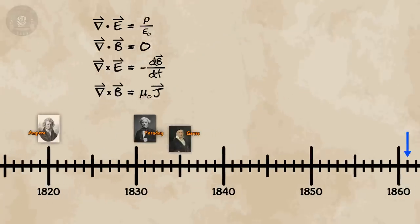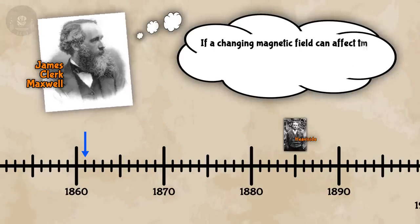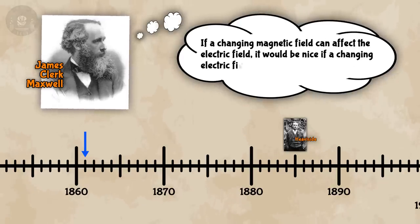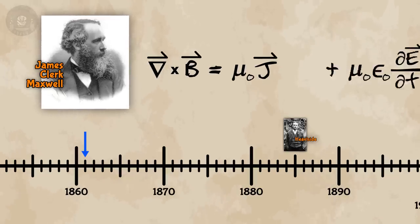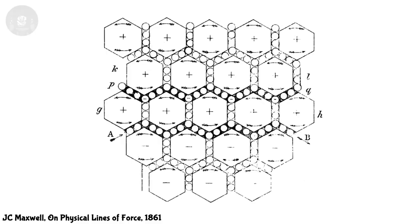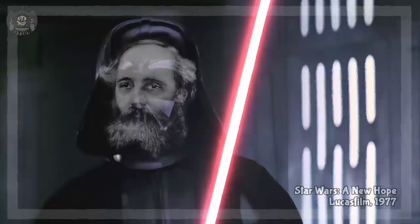Back to the timeline! 30 years after Faraday, James Clerk Maxwell enters the conversation. He thought to himself: if a changing magnetic field can affect the electric field, it would be nicer if a changing electric field could also affect the magnetic field — they should be able to affect each other. So he took Ampere's law and tacked on an extra term to make it happen. He did imagine a conceptual model first with a sea of tiny molecular vortices. That model was horribly wrong, but his result turned out to be correct anyway. Faraday said a changing magnetic field gives us an electric field, and now Maxwell is saying a changing electric field gives us a magnetic field. The circle is now complete.